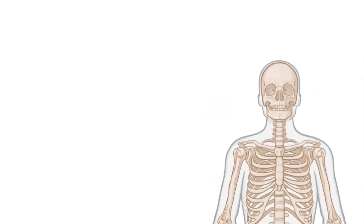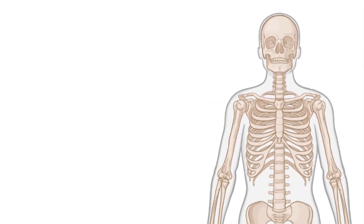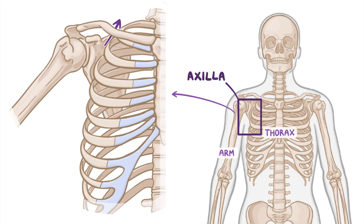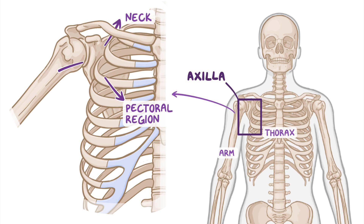Now let's start with the boundaries of the axilla. The axilla is located at the junction of the arm and thorax and connects superiorly to the neck, anteriorly to the pectoral region, inferolaterally to the upper limb, and inferomedially to the thoracic wall.